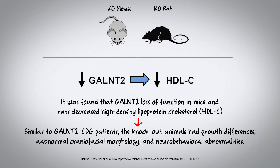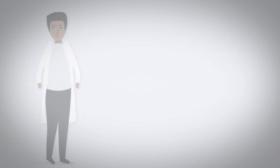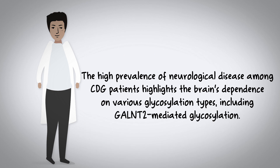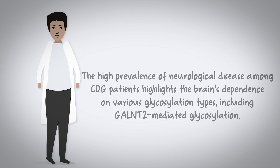We also characterized GALNT2 knockout rodent models, mouse and rat. Similarly to GALNT2-CDG patients, the knockout animals had growth differences, abnormal craniofacial morphology, and neurobehavioral abnormalities. These findings show that GALNT2's function is important in many organs of the body. The high prevalence of neurological disease among CDG patients highlights the brain's dependence on various glycosylation types, including GALNT2-mediated glycosylation.